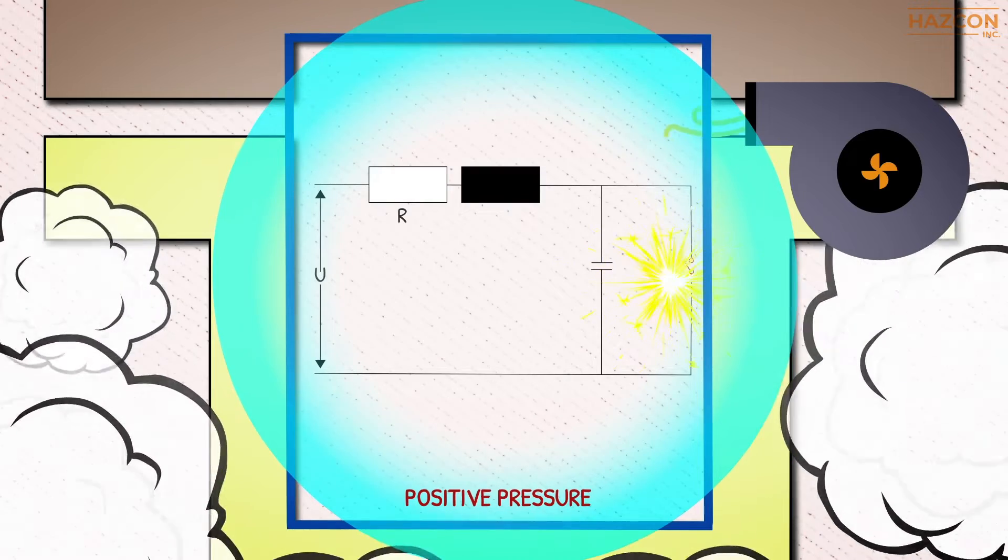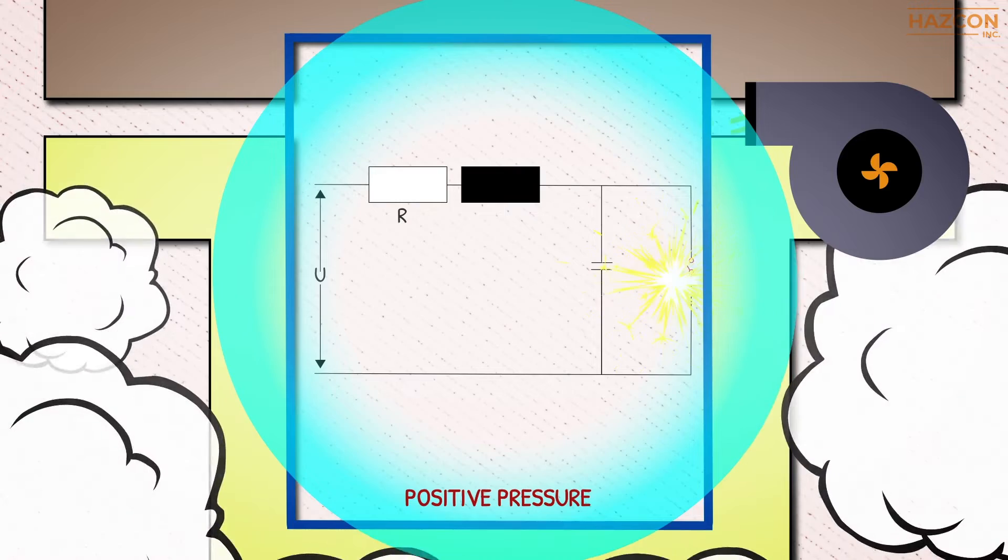The purging and pressurization technique creates a safe area inside the enclosure, meaning that uncertified equipment can safely be installed within it, even given a hazardous environment outside the enclosure.